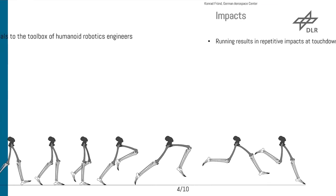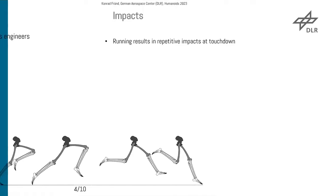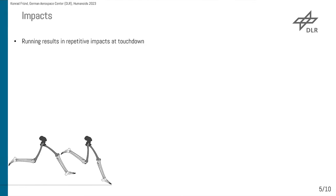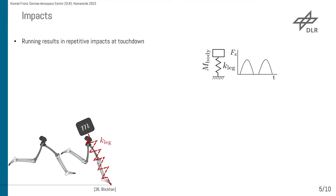The first bioinspired fundamental is about impacts. Running results in repetitive impacts at touchdown, and this might be one of the reasons why Blickhan created his famous spring-mass model for running and jumping. If you now take a deeper look into the model, you will see that the ground reaction force is shaped like a perfect inverse parabola, which is also heavily used in inverse dynamic control.